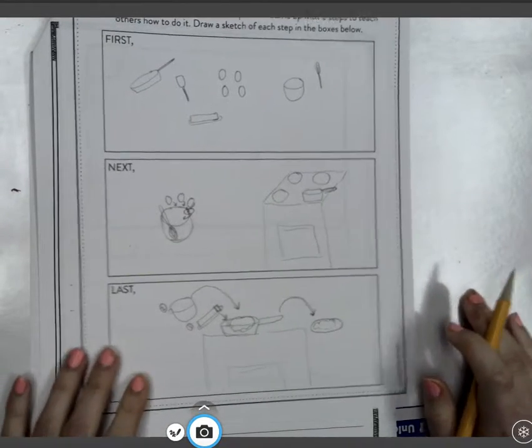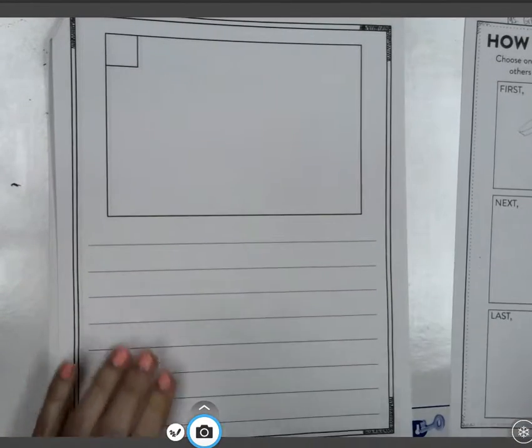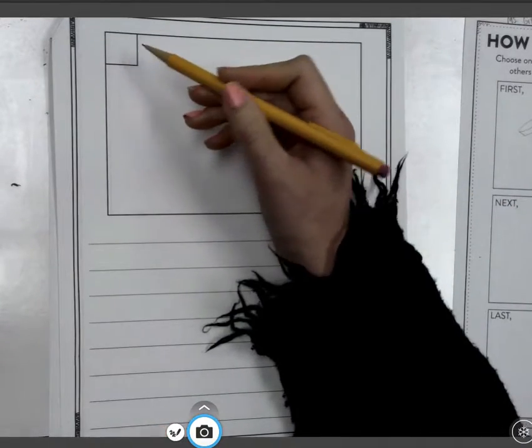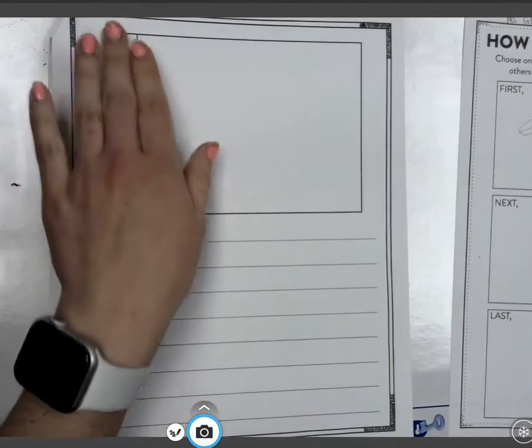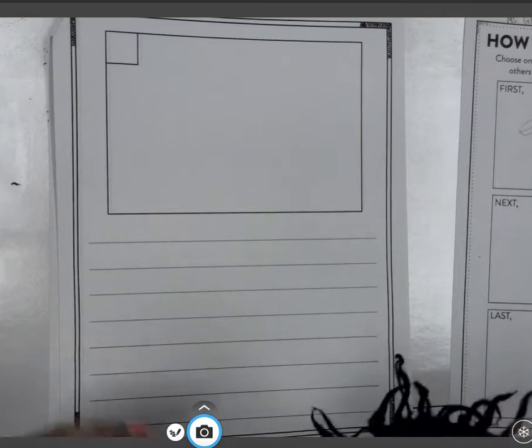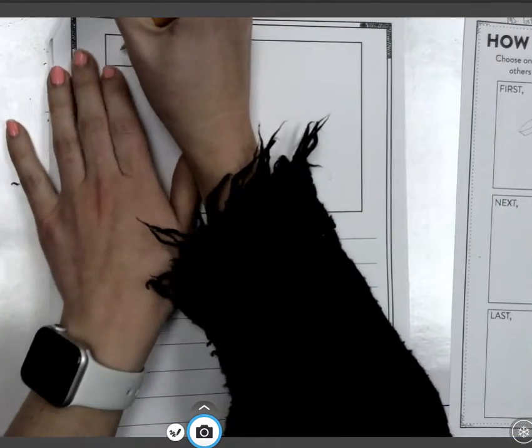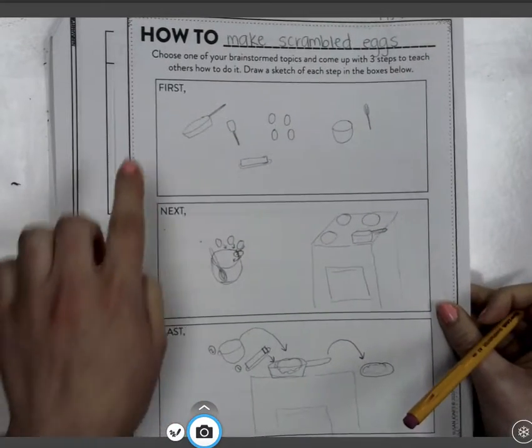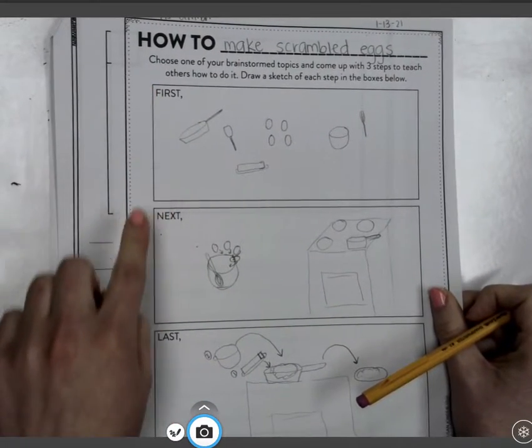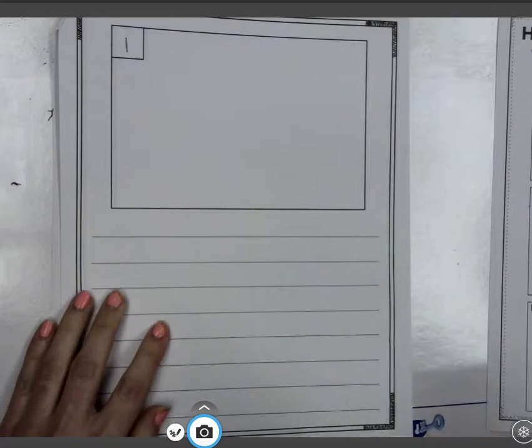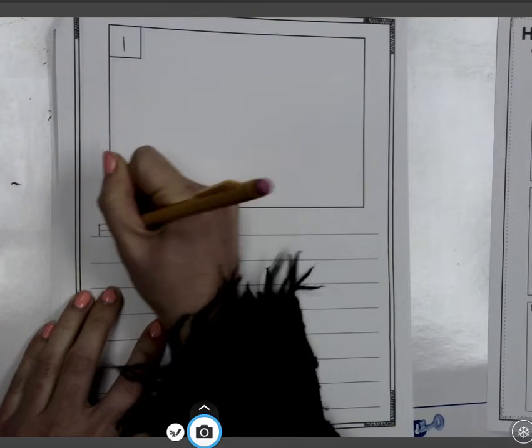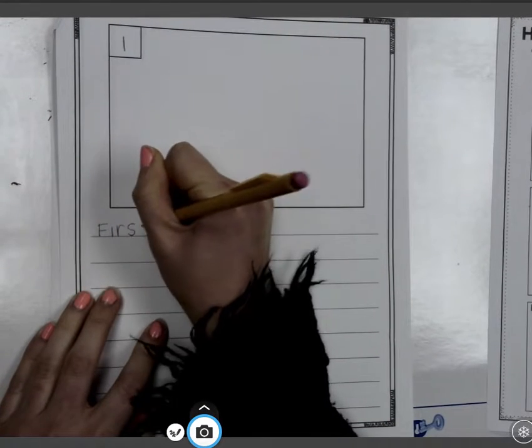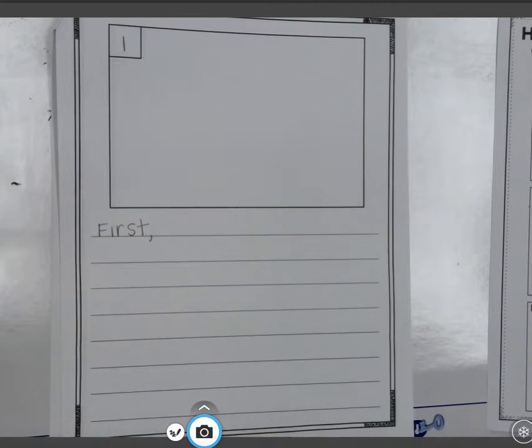So in these pages, you have these little boxes. This little box is for what number step it is. So for this one, this is step number one. If you look at this paper also, it has our transition words of first, next, last. So I'm going to add that here, so I remember that this is my first step.